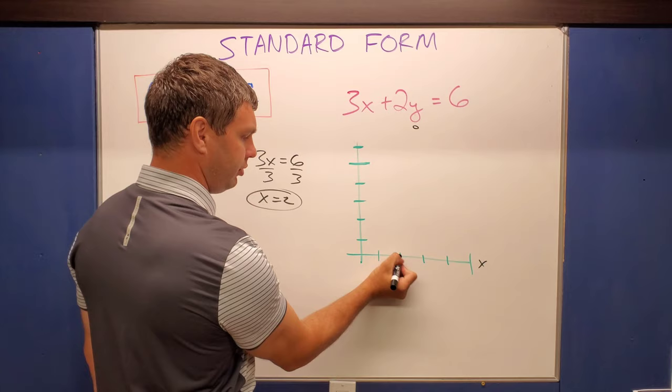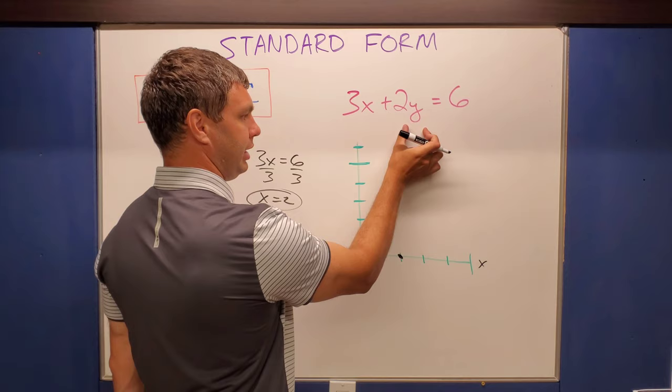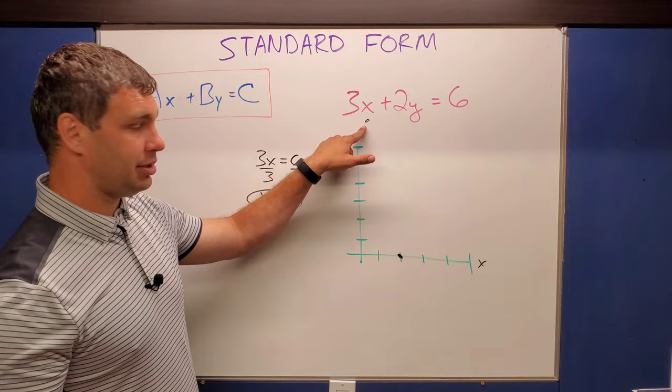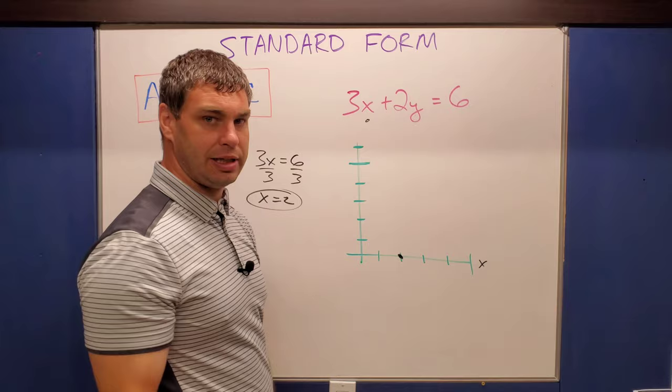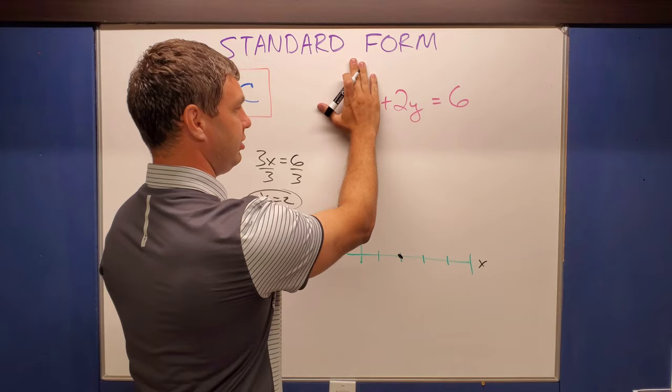And I can do the same thing for the y's as well. So since I want to find the y, I'm gonna put in a zero for the opposite variable, x in this case. Three times zero is zero, so what I'm left with is just two y equals six. In fact, notice what I did there. I kind of covered this up. Sometimes I call this to my class the coverup method, because you cover up the one you're not looking for, because when you plug in zero, it kind of goes away.